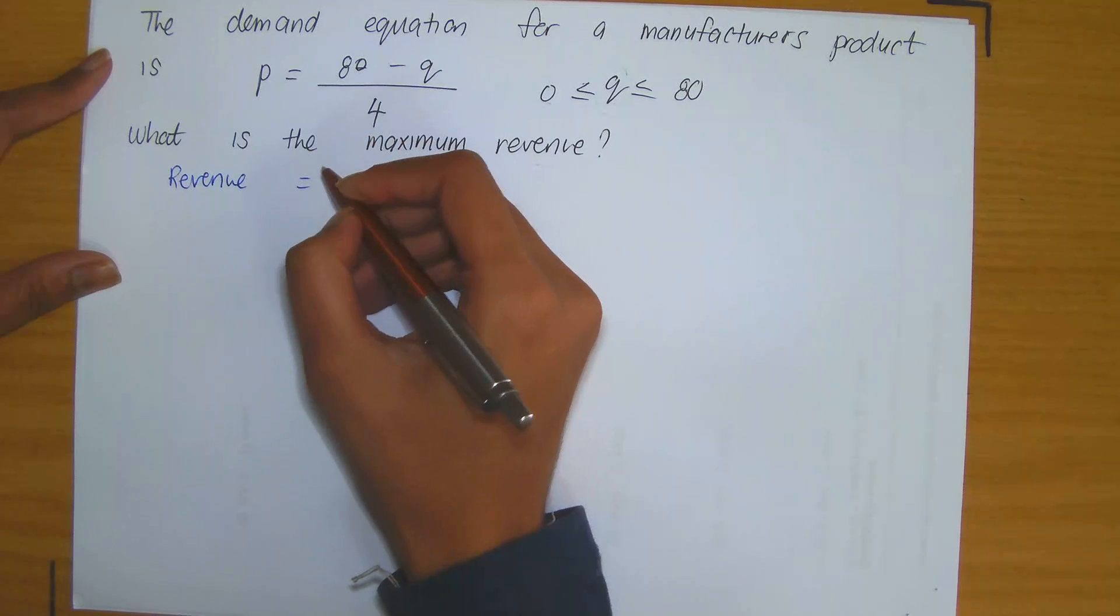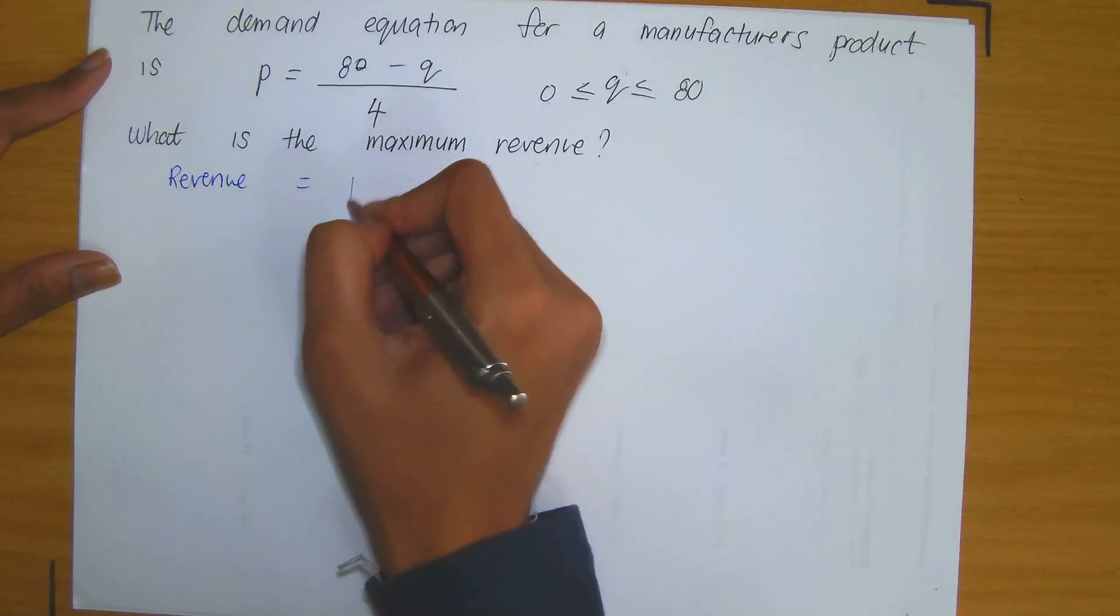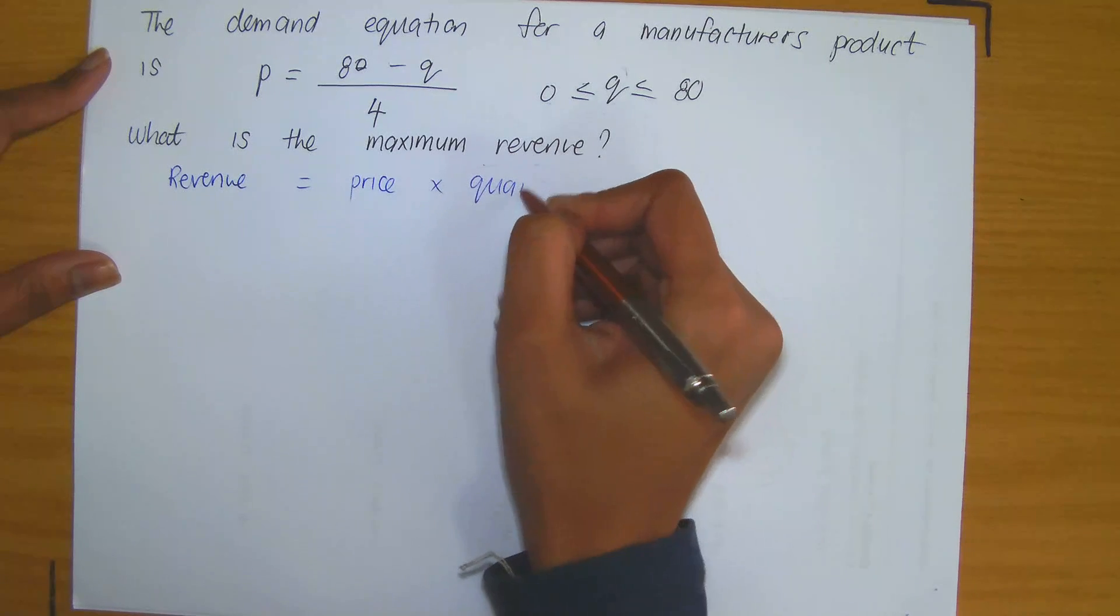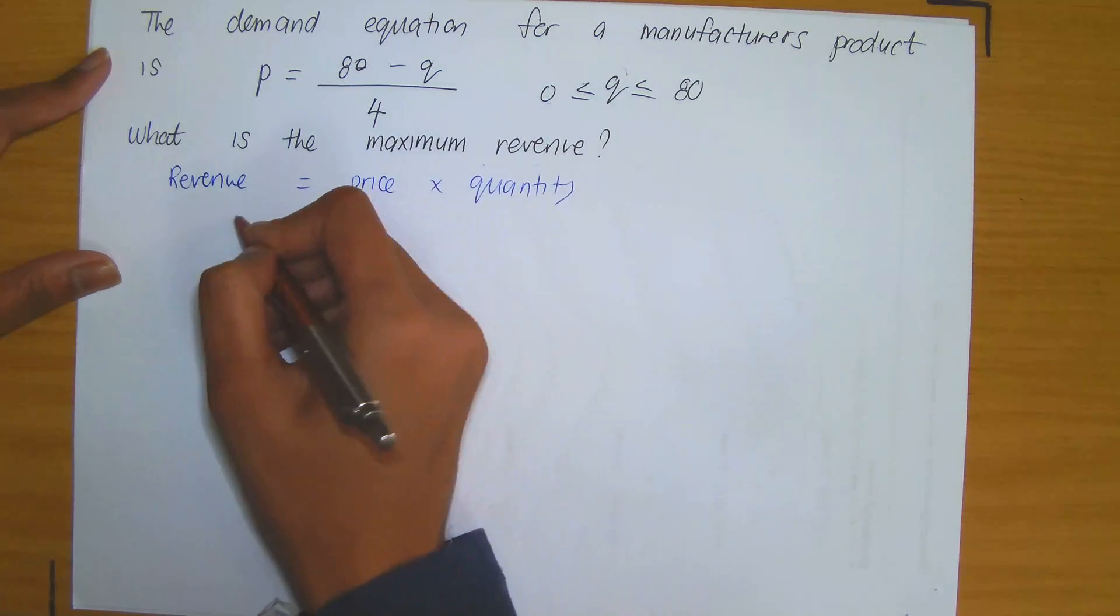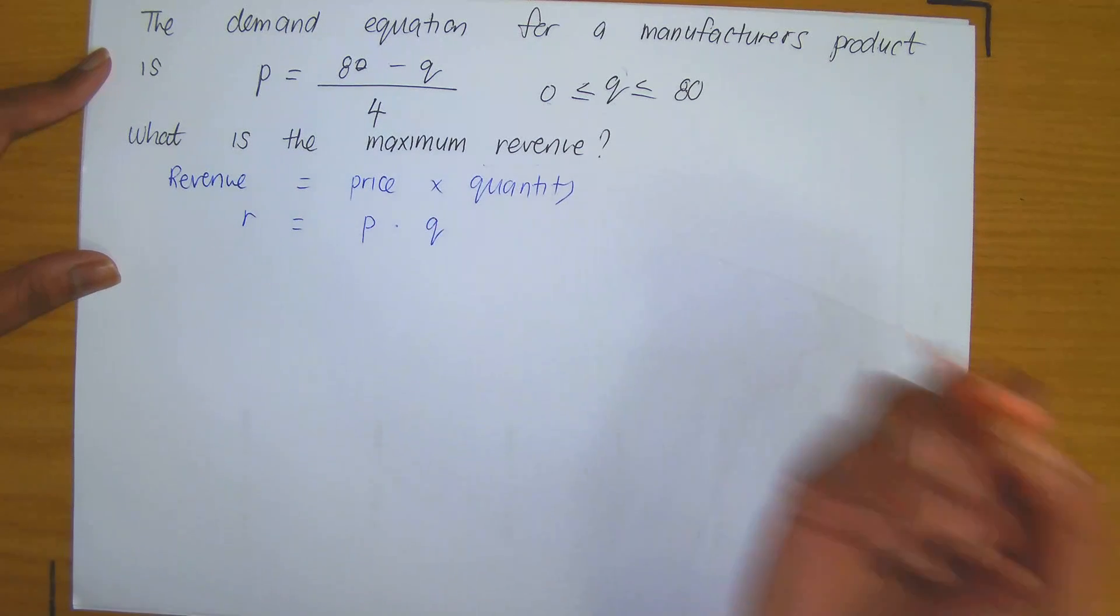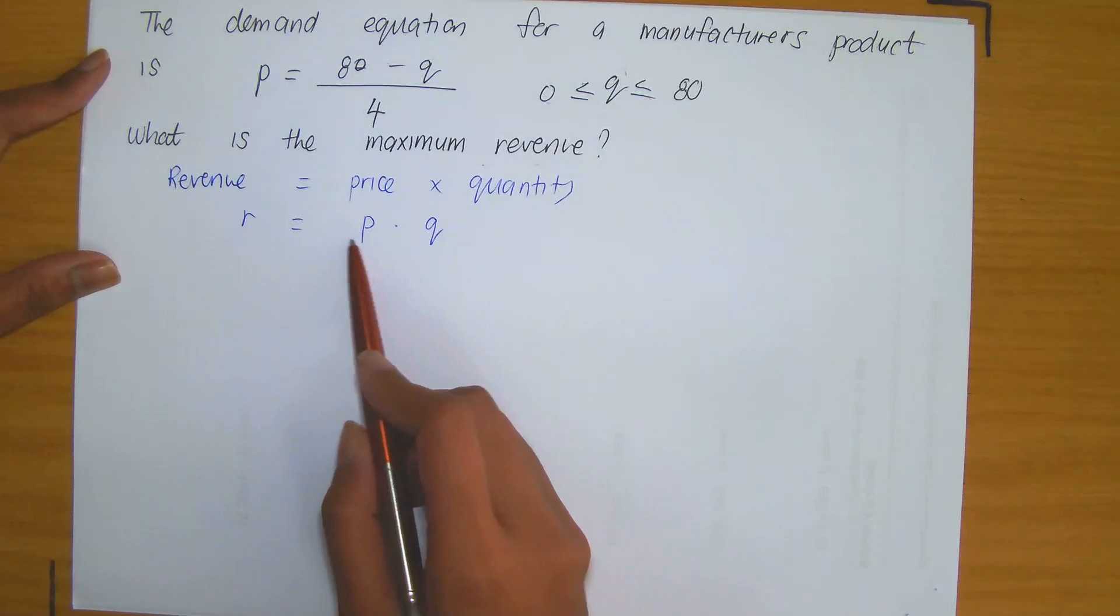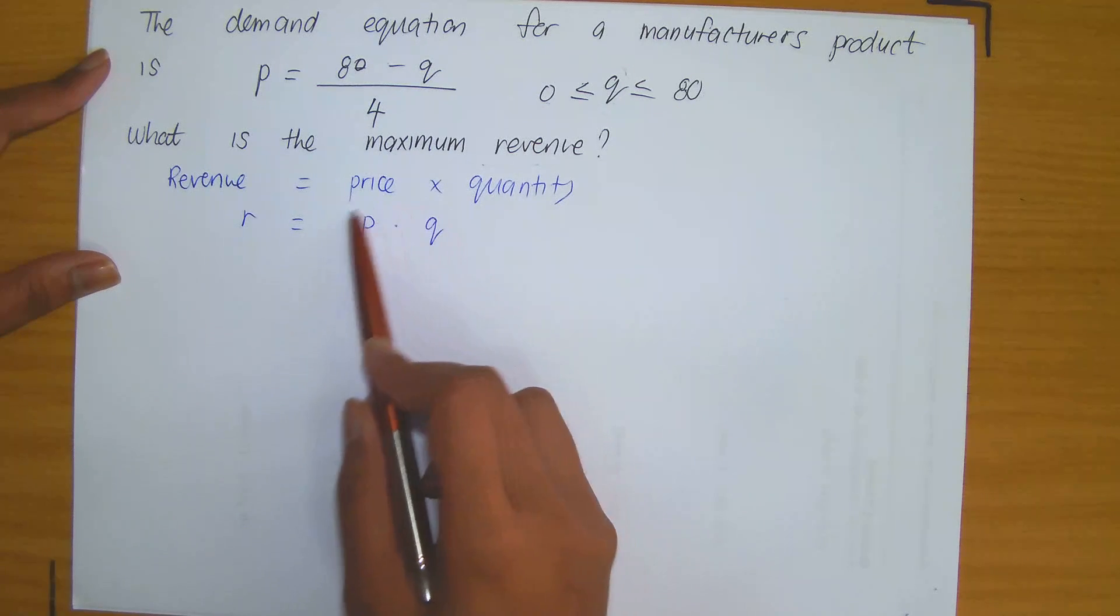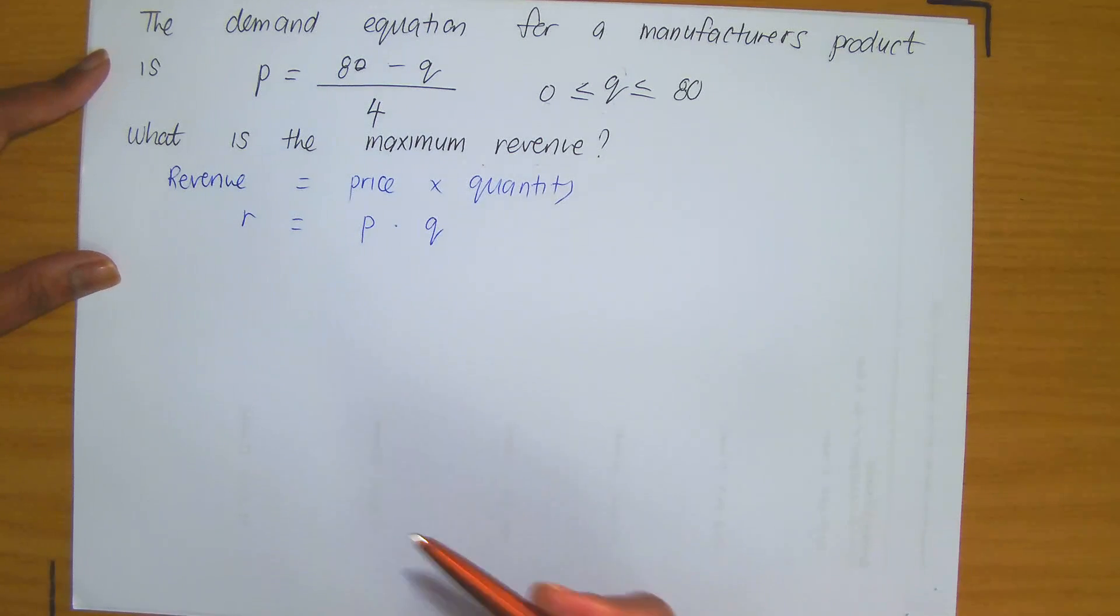Revenue is equal to price times quantity. So that means that revenue is equal to P times Q based on our notation. But now observe that we have revenue as a function of two variables.